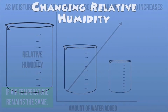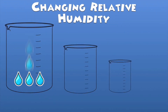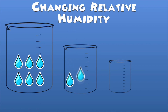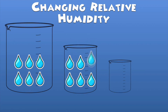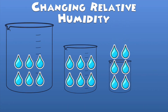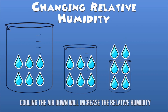The other way to change relative humidity is to change the temperature. With six water droplets in a large beaker representing warm air, there's lots of room left. If I cool the air down to a medium-sized beaker, those six droplets fill it with very little room left. In the smallest beaker — the coldest air — there's no room at all, and the water vapor spills out, which becomes precipitation. So cooling the air down will also increase the relative humidity.